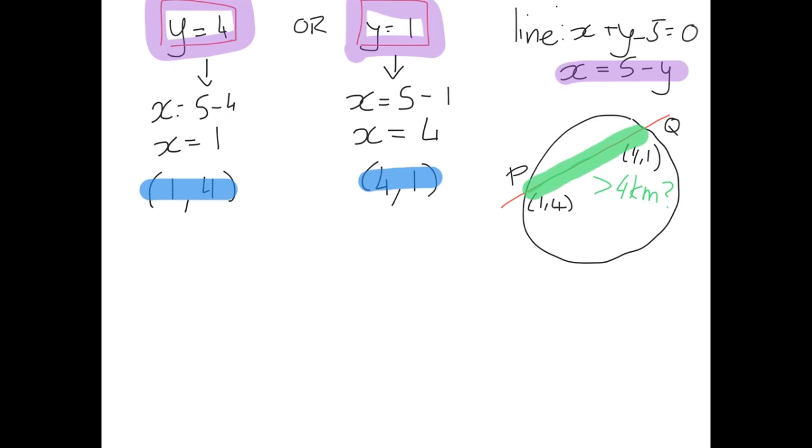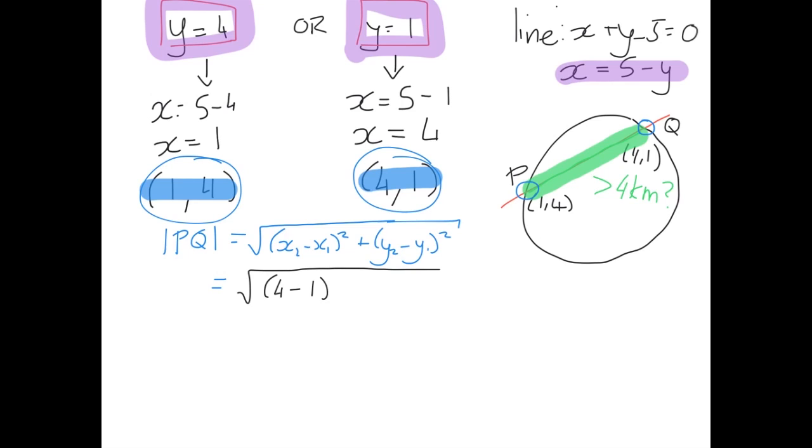We'll recall that the distance from P to Q by our distance formula is the square root of (x₂ - x₁)² + (y₂ - y₁)². Filling in the values from our two points, this equals the square root of (4 - 1)² + (1 - 4)², which equals the square root of 9 + 9, which equals the square root of 18.